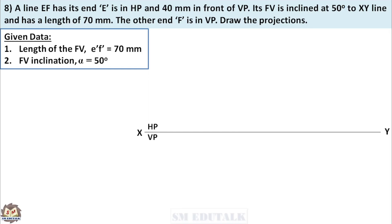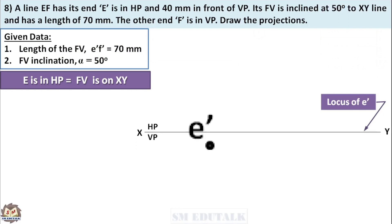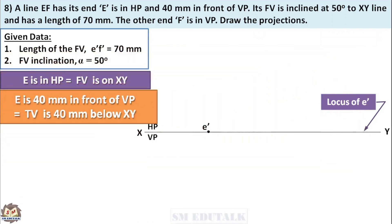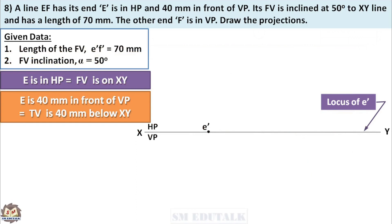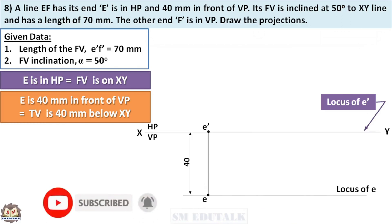First, draw a reference line XY. The position of first end point E is given as in HP and 40mm in front of VP. For the first condition, point E is in HP, meaning the front view of point E should be drawn on the XY line — so XY acts as the locus of E dash. Mark a point anywhere on the left side — this is the front view of end point E, that is E dash. For the next condition, point E is 40mm in front of VP, so the top view of E should be 40mm below XY. Draw a thin horizontal line 40mm below XY — this is the locus of E. Project point E dash vertically downward to get point E, the top view of end point E.